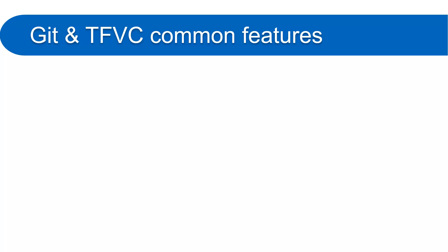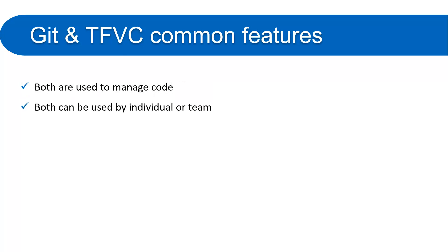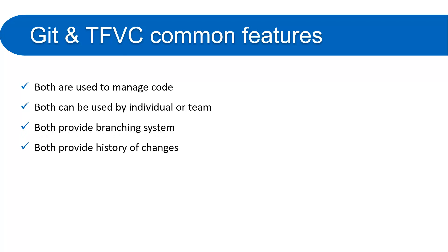Now let's understand the common features in both version control systems. Both are used to manage code. Both can be used by individuals or teams. Both provide a branching system, which is very important when working with version control. Both provide history of changes, so you can find out all the changes made by the team on a particular file. Both are used to merge code.